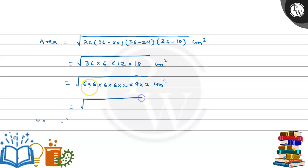Further simplifying: 6×6 = 6², another 6×6 = 6², 2×2 = 2², and 9 = 3². So we have √(6²×6²×2²×3²).